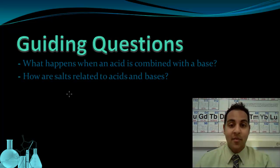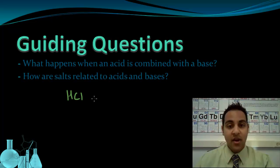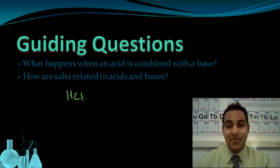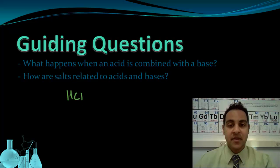Let's start by talking about a common acid: hydrochloric acid. This is a common strong acid, even found in your stomach. Sometimes you can build up too much hydrochloric acid in your stomach and it becomes overly acidic. When that happens, we call it acid indigestion. You could experience symptoms of acid indigestion like heartburn or nausea, and those are generally unpleasant symptoms.